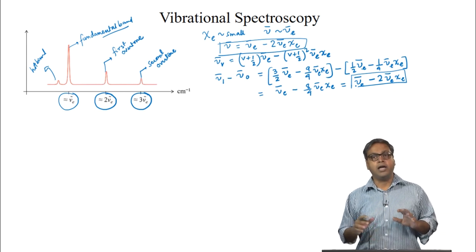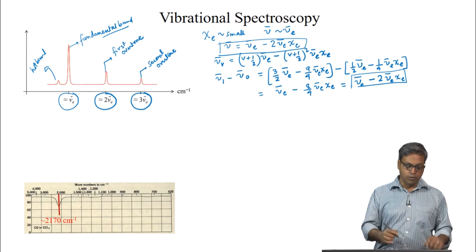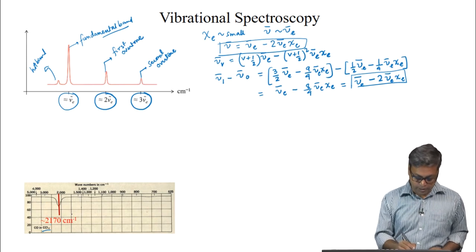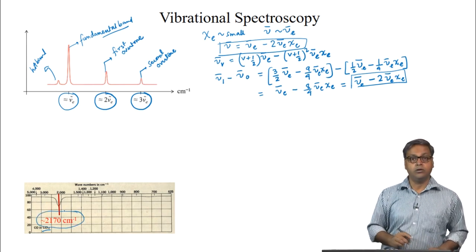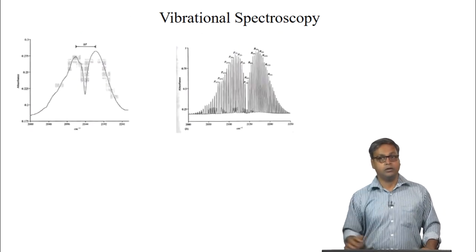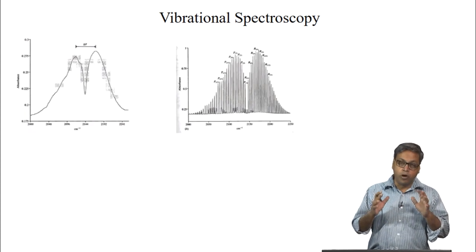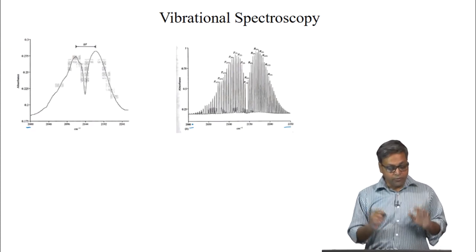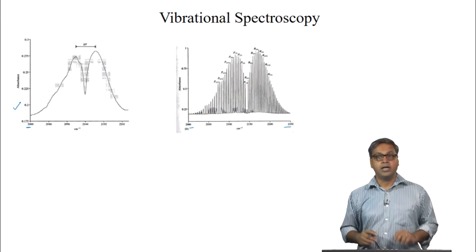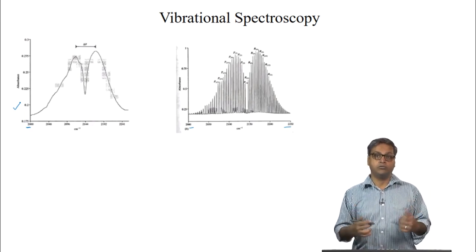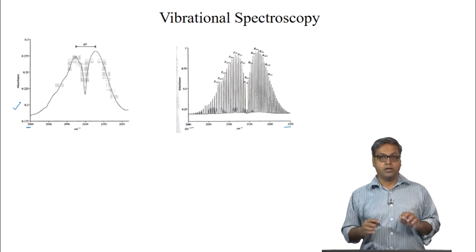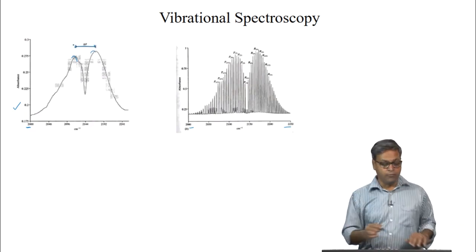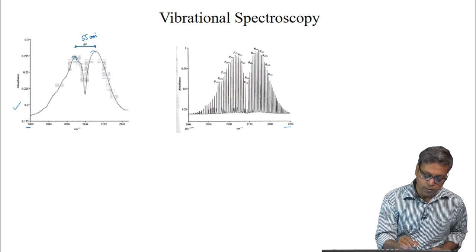Let us now look at the IR spectrum of carbon monoxide dissolved in CCl4. The fundamental band appears at 2170 wavenumbers. If we look at the carbon monoxide spectrum in the gas phase, we see a different kind of spectrum. The low-resolution spectrum shows 2 peaks separated by roughly 55 wavenumbers.